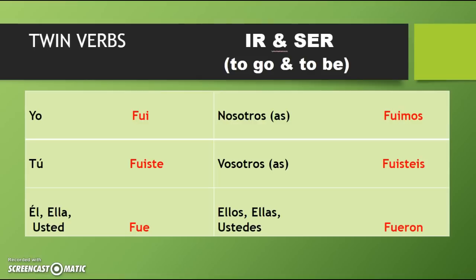Los verbos gemelos, or twin verbs. What's nice about ir and ser is they're actually going to conjugate identically. So we do have five verbs here, but really we're only going to have four charts that you'll need to know. Yo fui, tú fuiste, él/ella/usted fue, nosotros/nosotras fuimos, vosotros/vosotras fuisteis, ellos/ellas/ustedes fueron.